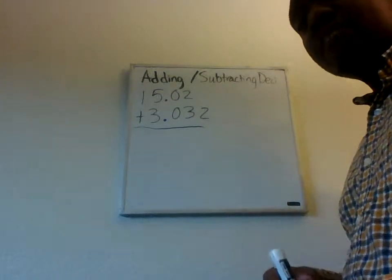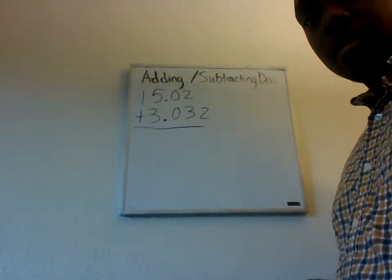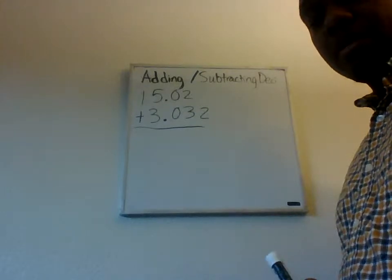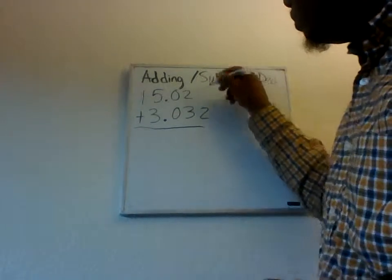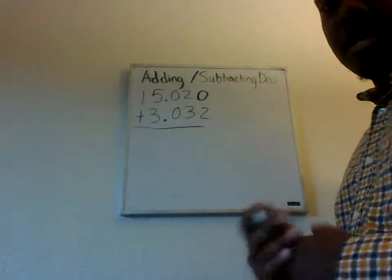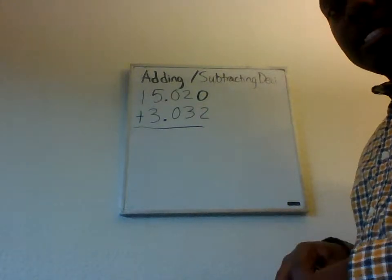Well, this first number doesn't have a thousandth value. It doesn't have a value in the thousandths placeholder. Well, that's okay. We can always add a zero so that it now does. And that makes things easier to add.